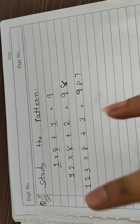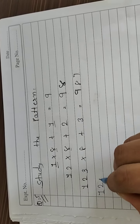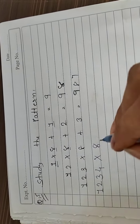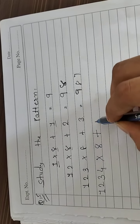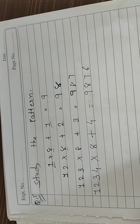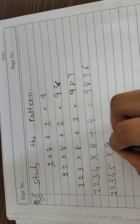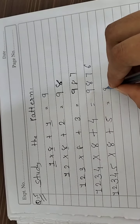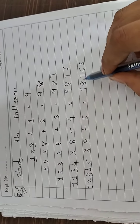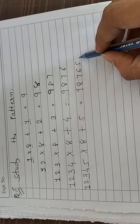इसके बाद का step: 1234 into 8 plus 4 — answer: 9,876। फिर 12345 × 8 + 5 = 98,765। Pattern में multiplication number में increasing order है और answer में decreasing order: 9, 8, 7, 6, 5... यहाँ पर 1 by 1 decreasing number आ रहे हैं — 9 के बाद 8, 8 के बाद 7।